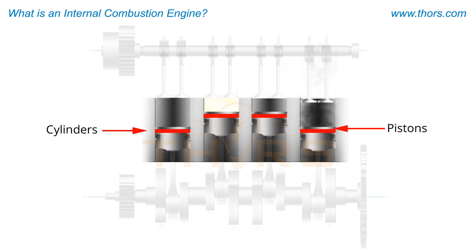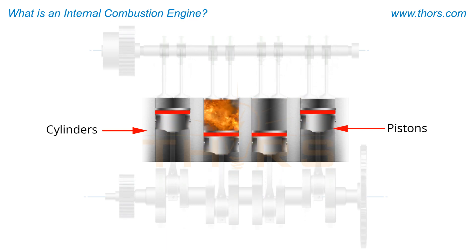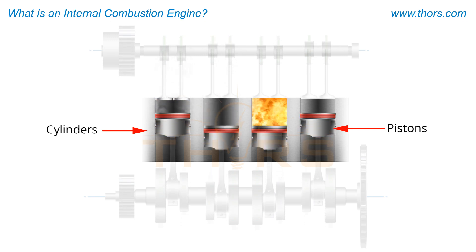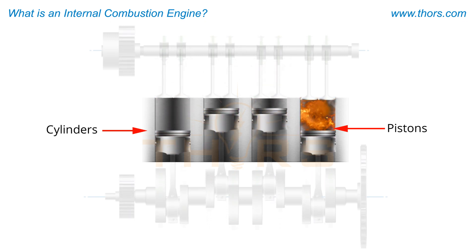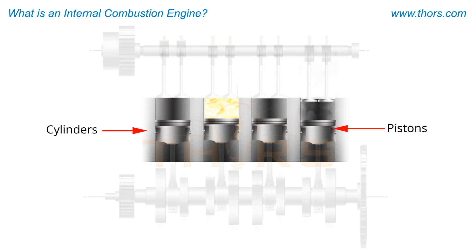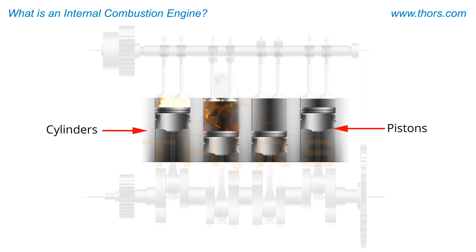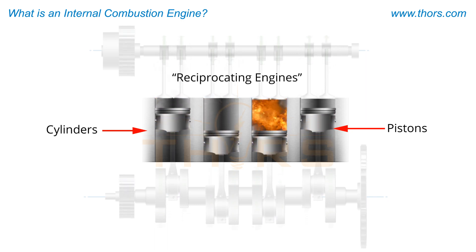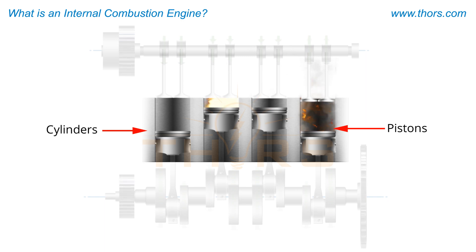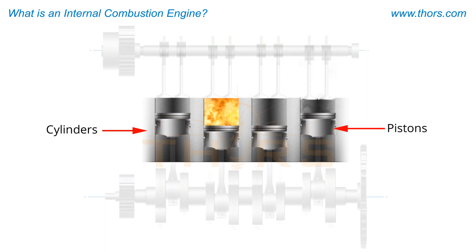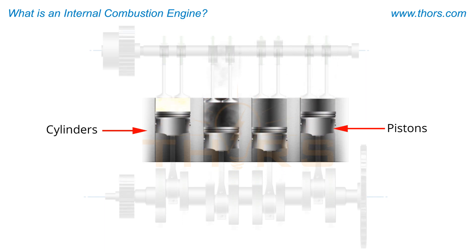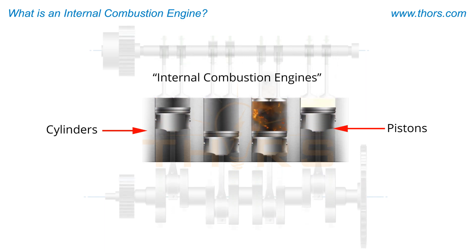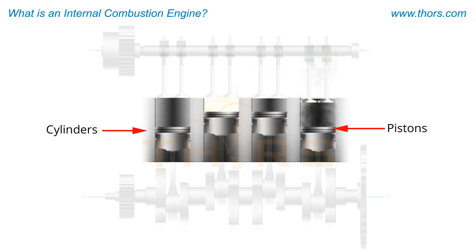When an air and fuel mixture is ignited in the cylinder, an explosion occurs forcing the piston downward. The reciprocating motion is the reason these might be referred to as reciprocating engines. The controlled explosions are the reason these might also be called internal combustion engines.